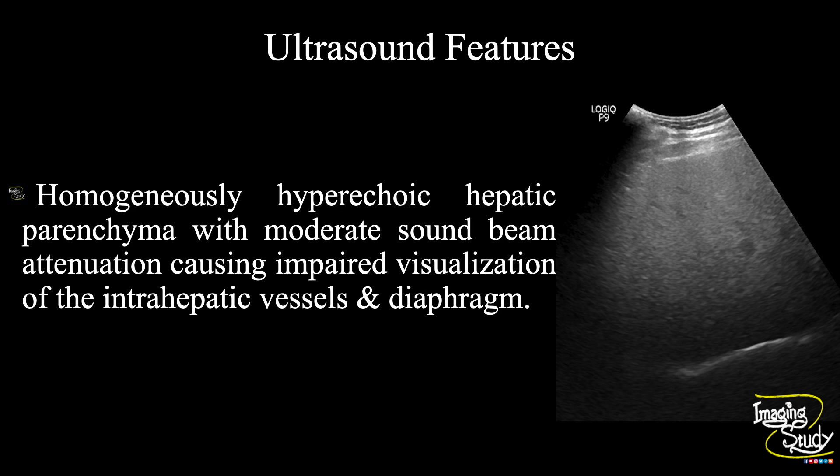In summary, the hepatic parenchymal echogenicity is homogenously increased with moderate sound beam attenuation, causing impaired visualization of intrahepatic vessels and diaphragm. This feature suggests a case of moderate hepatic steatosis, or moderate fatty change in liver.